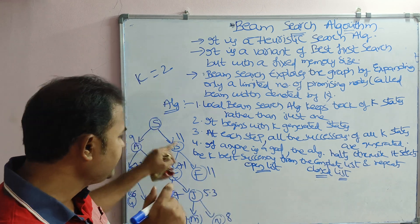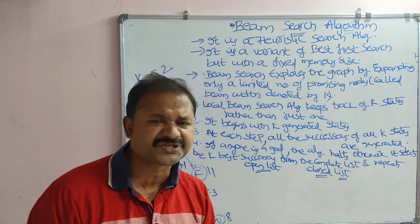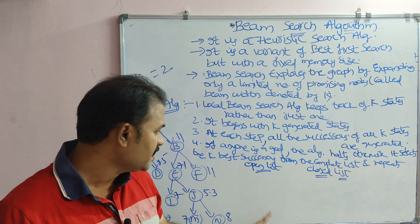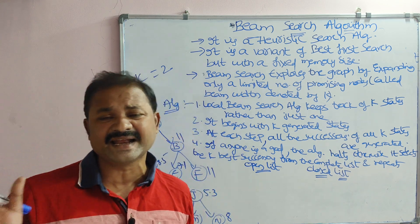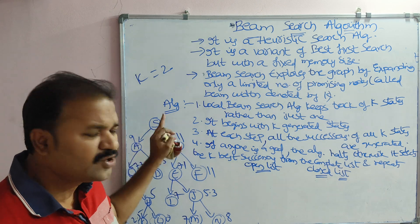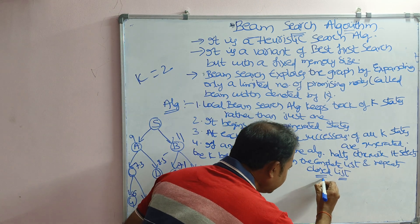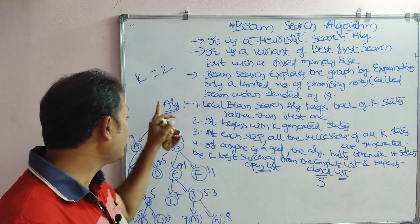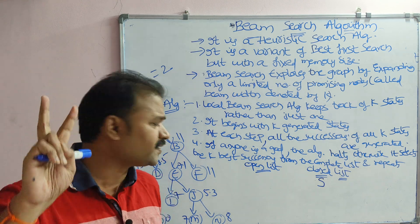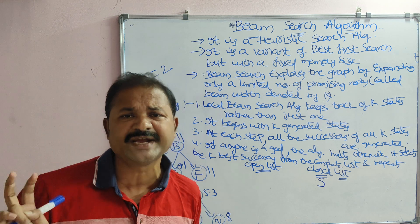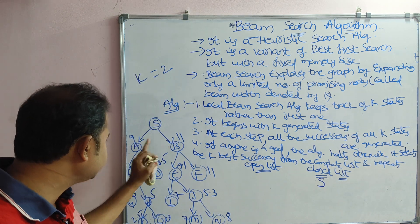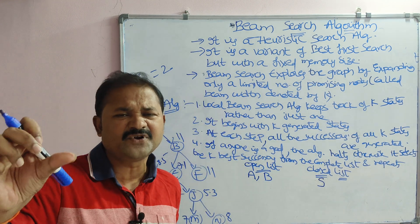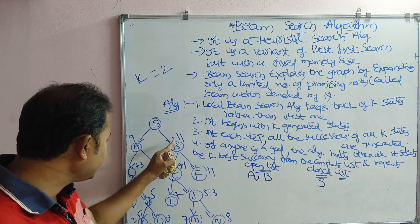We have two types of lists for solving this problem: open list and closed list. The closed list contains the nodes that have been explored; the open list contains the nodes that have been generated. Initially, node S is explored, so we place S in the closed list. Since k equals 2, the open list should contain only two states at a time. S's successors are A and B, so the open list contains A and B.